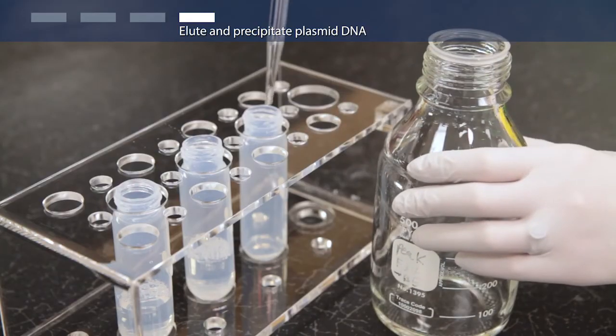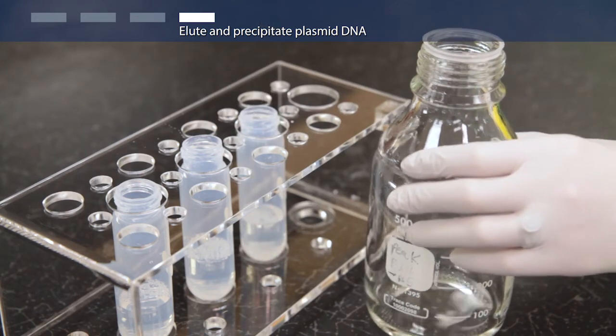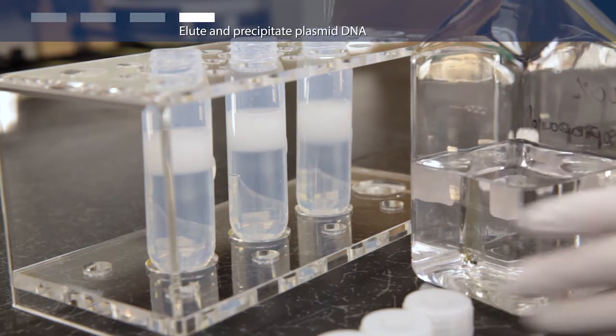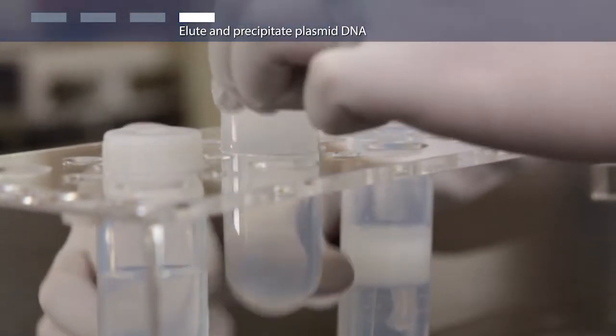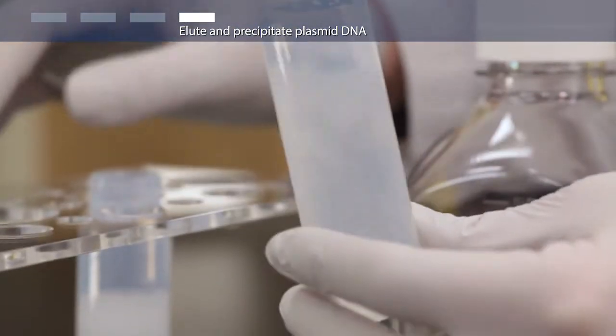Transfer the eluate into 30 milliliter centrifuge tubes and add 0.7 volume of isopropanol per volume of eluate. Mix by gently inverting. Centrifuge at greater than 12,000 times G for 30 minutes at 4 degrees Celsius.